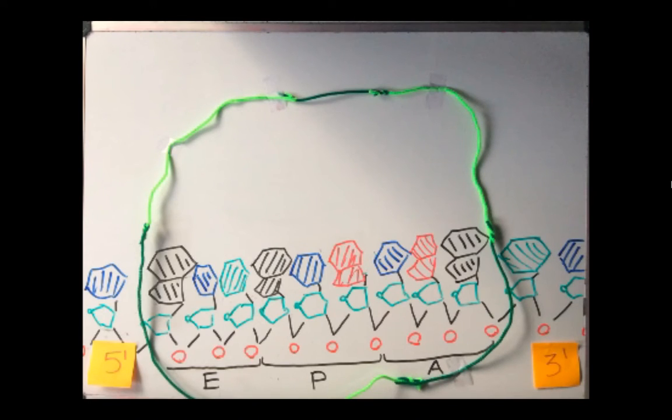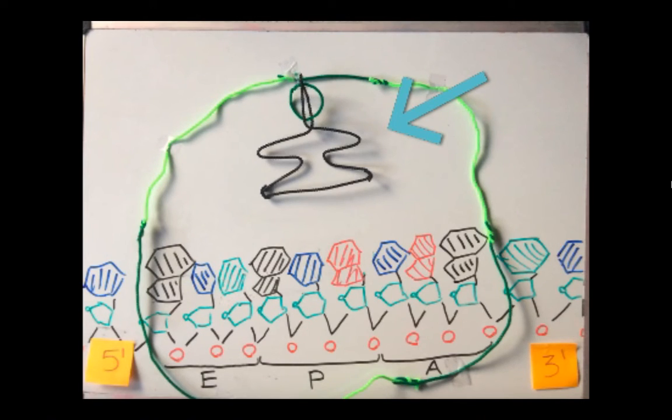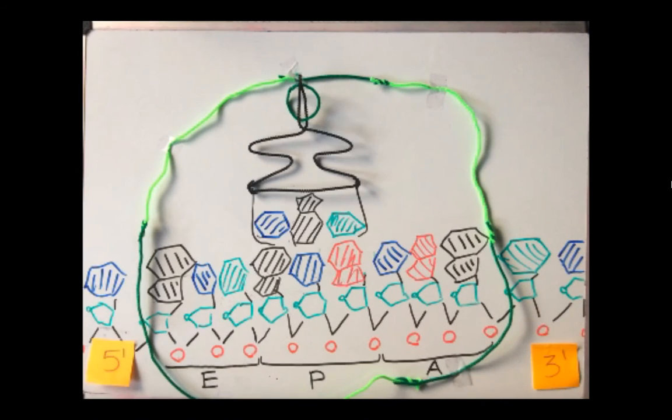A type of RNA called transfer RNA, or tRNA, enters the ribosome with an amino acid attached. The anticodon of the tRNA, which is three consecutive bases, is complementary to the codon of the mRNA. When the first tRNA enters, it enters into the P section in the center of the ribosome.